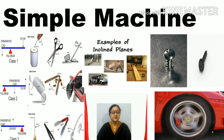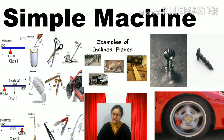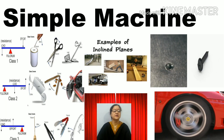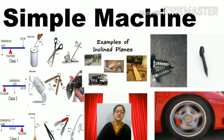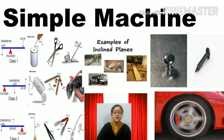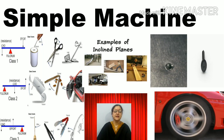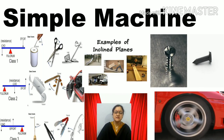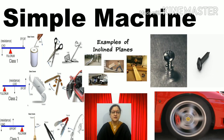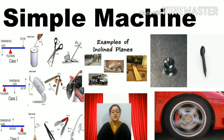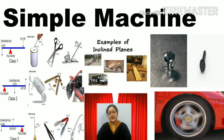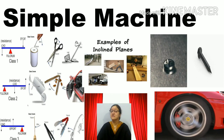Simple machines make our work easier in this way: first, they increase the amount of force applied; second, they change the direction of the force applied; and they increase the speed of doing work. Machines are mainly of the following types: lever, inclined plane, screw, pulley, wheel and axle, and one more simple machine — wedge.